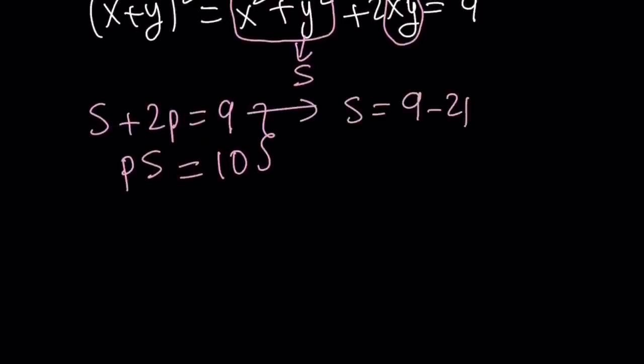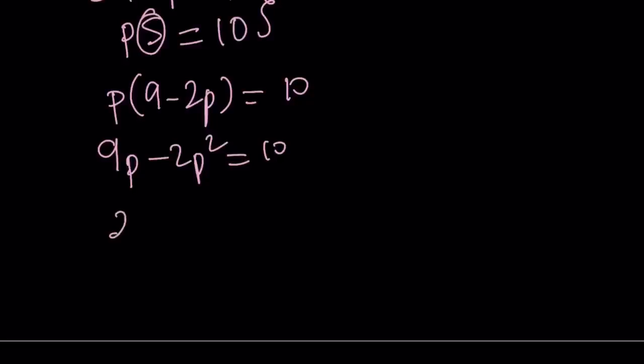Let's replace s with 9 - 2p. And if you do that here, you get p(9-2p) = 10. That gives us 9p - 2p² = 10. And if you put everything on the same side, on the positive side, 2p² - 9p + 10 = 0.